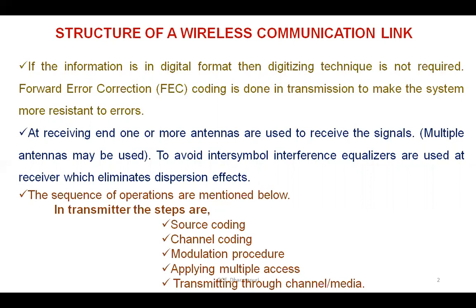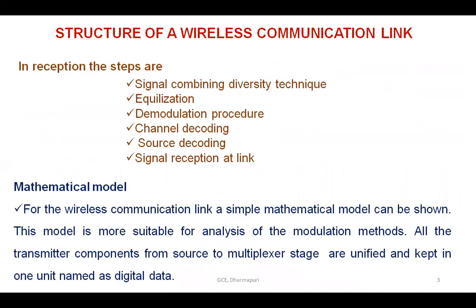The operations in the transmitter and receiver side are as follows. In the transmitter, the steps are: source coding, channel coding, modulation, applying multiple access, transmitting through the channel, and reception. On the receiver side, the steps are: signal combining using a diversity technique, equalization, demodulation, channel decoding, and source decoding.